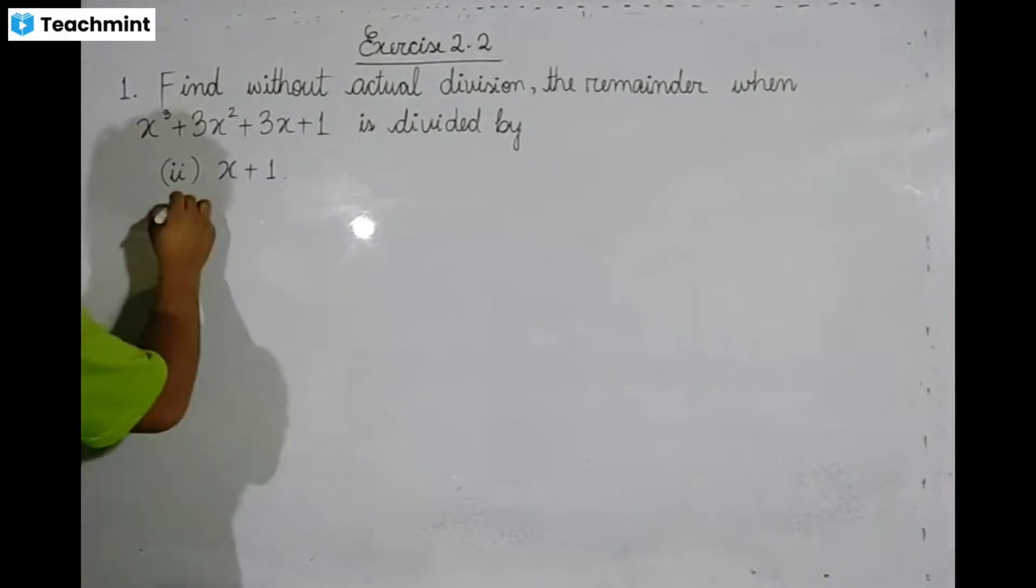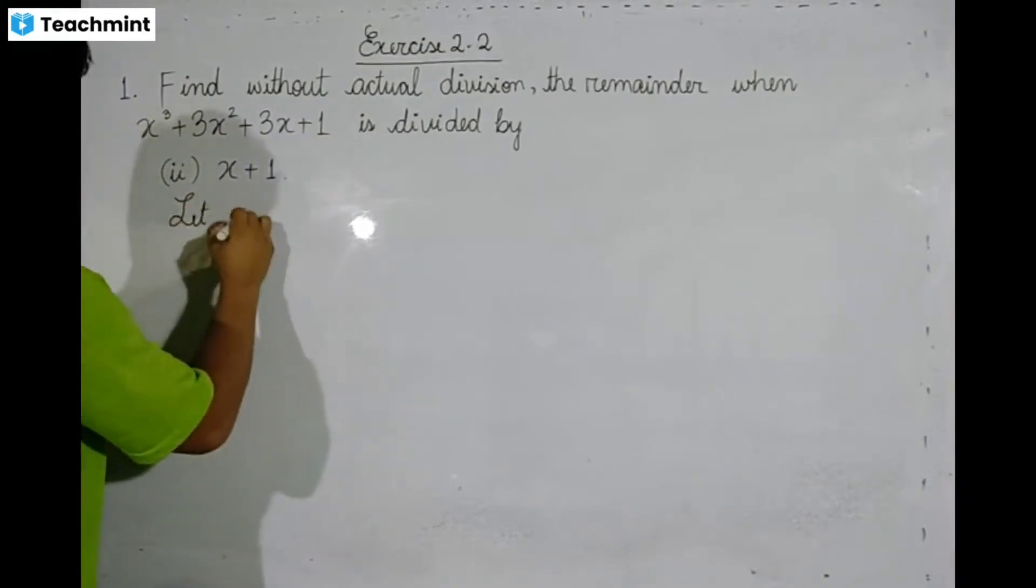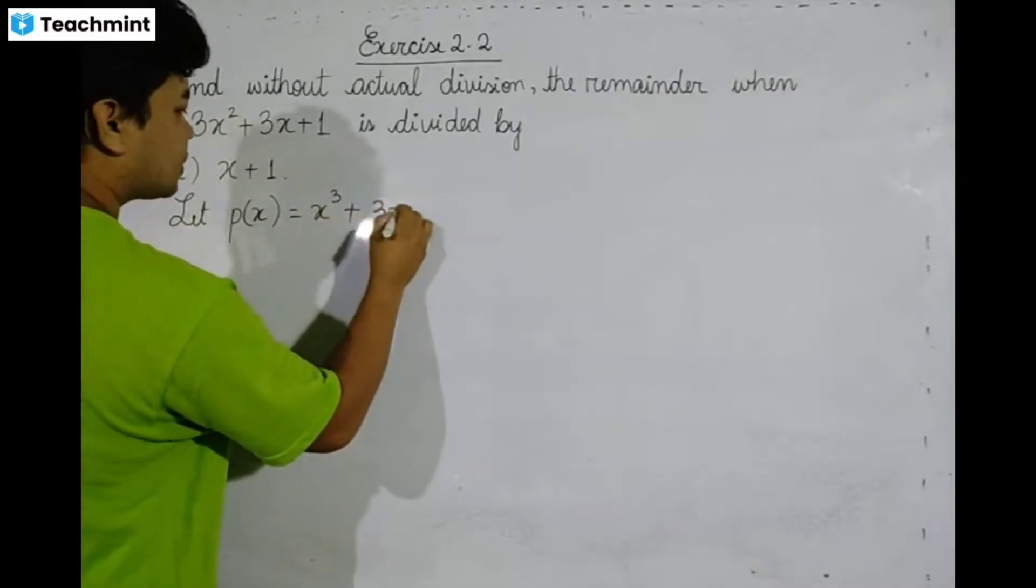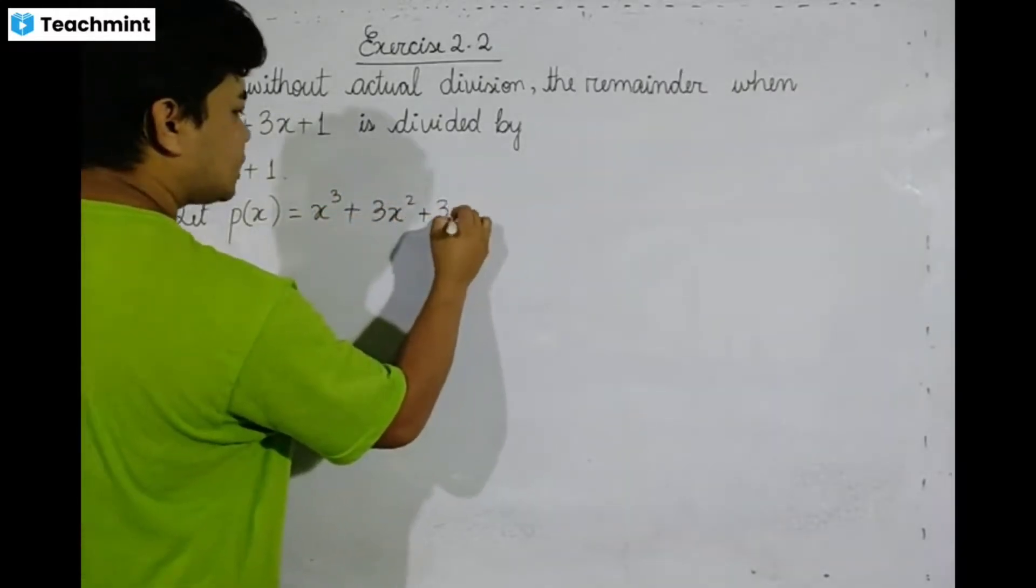The equation is p(x) = x³ + 3x² + 3x + 1.